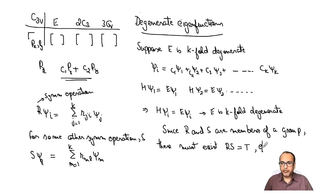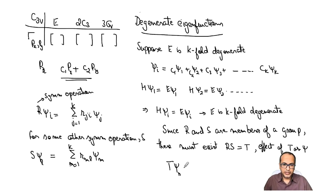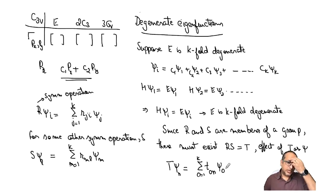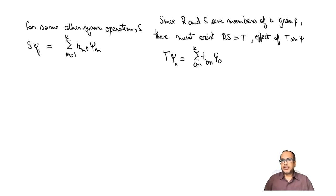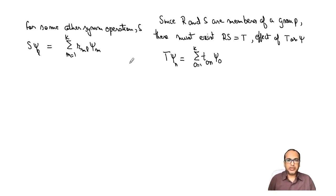The effect of T on psi_n can be written as summation over o from 1 to k of t_on * psi_o. Because R*S equals T, if we calculate the combined effect of R and S on a given linear combination, the coefficients — or characters — must match those of T acting on the same linear combination.